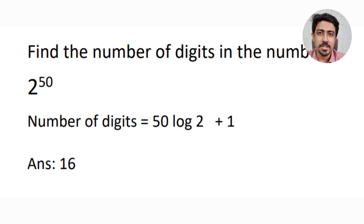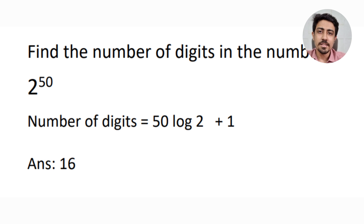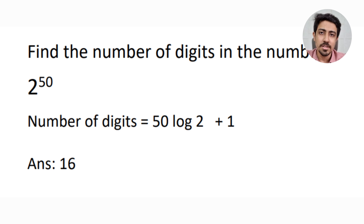The next type of question is: find the number of digits in a particular number, like 2 to the power 50. This is very simple — you use logarithm. For 2^50, the number of digits is floor(50 · log 2) + 1.